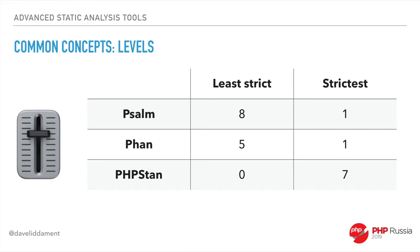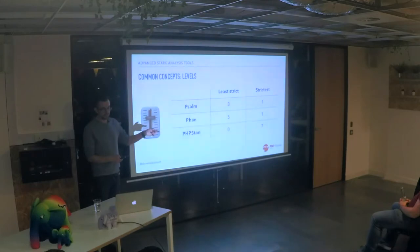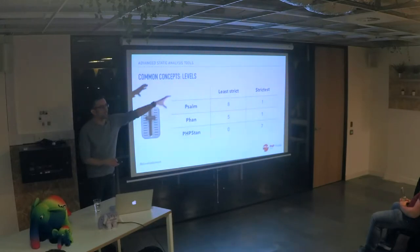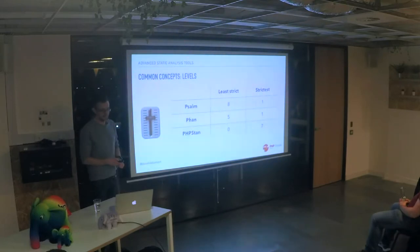A common concept all these tools share is the concept of levels — a very strict level and a less strict level. PHPStan now goes up to level 8. The reason the highest level increments is as it adds more and more rules, they become more and more strict. It also has a max level option when setting up, which will pick the strictest setting if that's what you want.